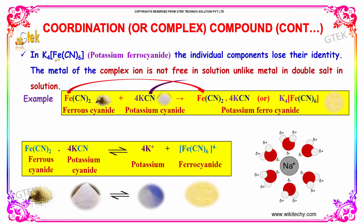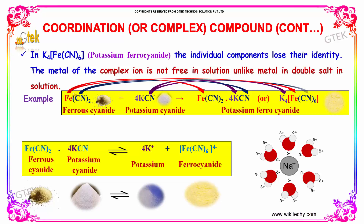In potassium ferrocyanide, the individual compounds lose their identity. The metal of the complex ion is not free in solution, unlike the metal in a double salt in solution — they lose their identity. When iron is mixed with potassium cyanide, you get potassium ferrocyanide.